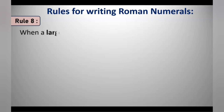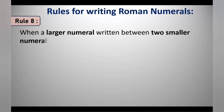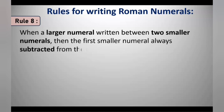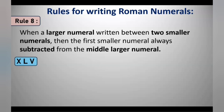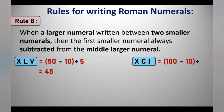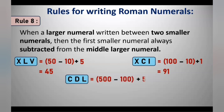Rule 8: When a larger numeral is written between two smaller numerals, the first smaller numeral is always subtracted from the middle larger numeral. For example, in XLV, L is the larger numeral between X and V, so X is subtracted from L: 50 minus 10 plus 5 equals 45. In XCI, C is between X and I, so 100 minus 10 plus 1 equals 91. In CDL, D is between C and L, so 500 minus 100 plus 50 equals 450.